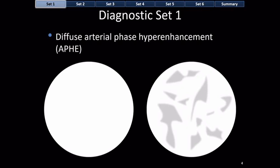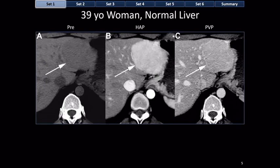By diffuse arterial phase hyperenhancement, I mean that the nodule enhances throughout — the outer third, middle third, and in-between all enhance. The enhancement might be homogeneous, as shown on the schematic on the left, or heterogeneous on the right. But the key thing is that the whole thing is enhancing.